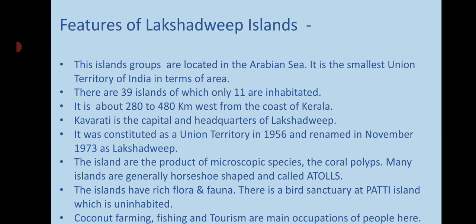Now the features of Lakshadweep Island: this island group is located in the Arabian Sea. It is the smallest union territory of India in terms of area. There are 39 islands, of which only 11 are inhabited. It is about 280 to 480 kilometers west from the coast of Kerala.